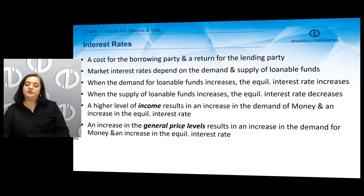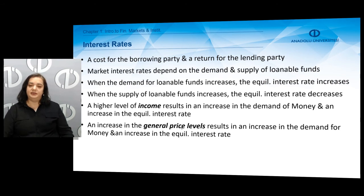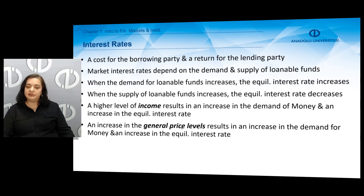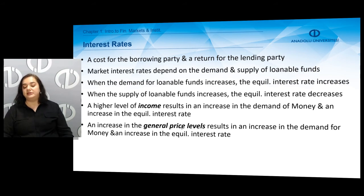When the supply of loanable funds increases, the equilibrium interest rate decreases. You can think of the interest rate as the price of loanable funds. A higher level of income results in an increase in the demand for money and therefore an increase in the equilibrium interest rate — we call this the income effect. On the other hand, an increase in the general price levels results in an increase in the demand for money. So when inflation rises, we expect the equilibrium interest rate to rise — we call this the price effect.